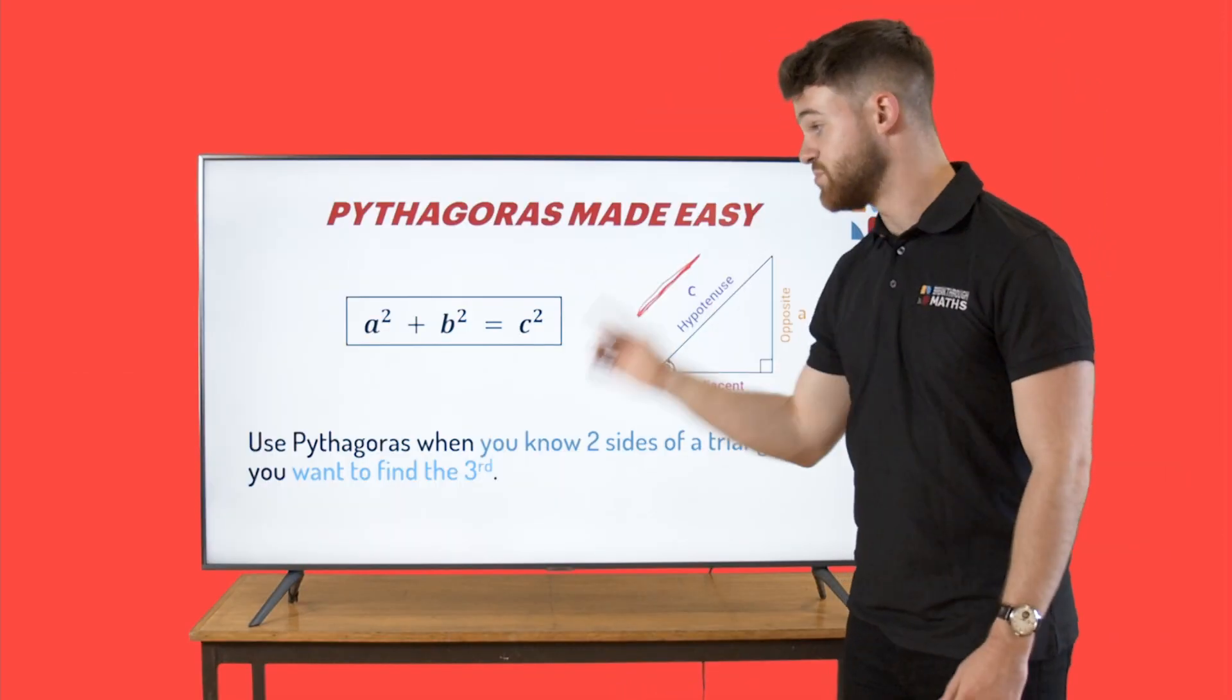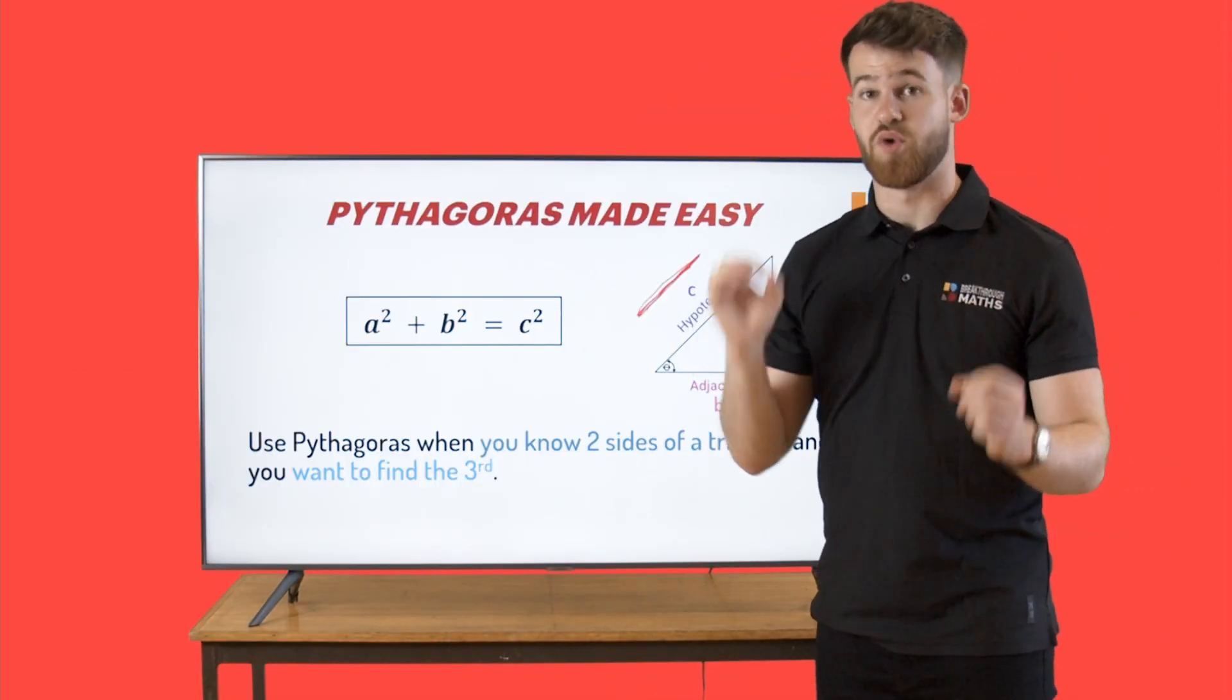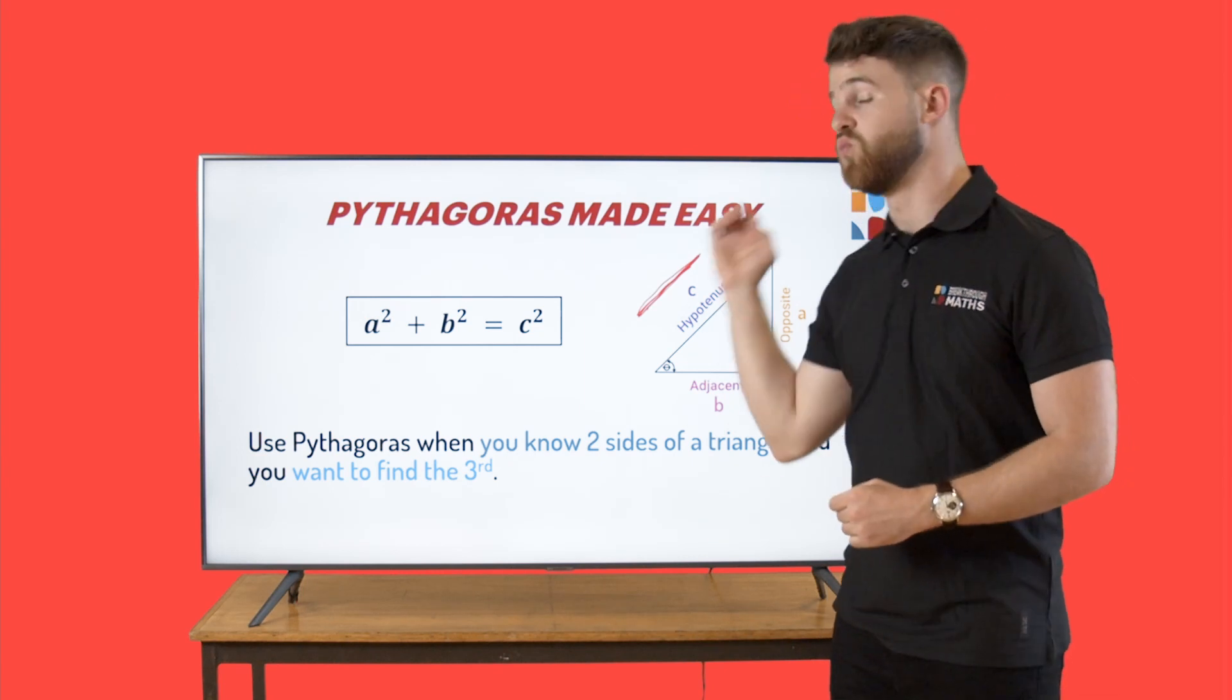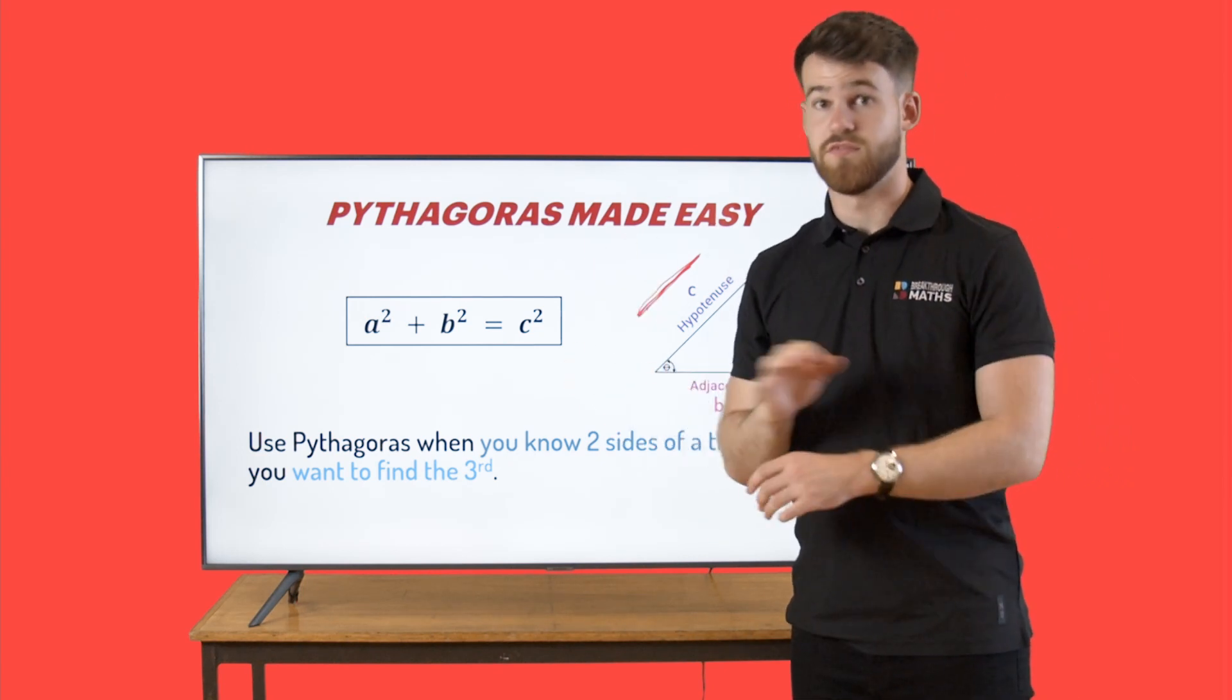When do you use Pythagoras? Well, you use Pythagoras when you know two sides of a right-angled triangle and you want to find the third. That's the only time.